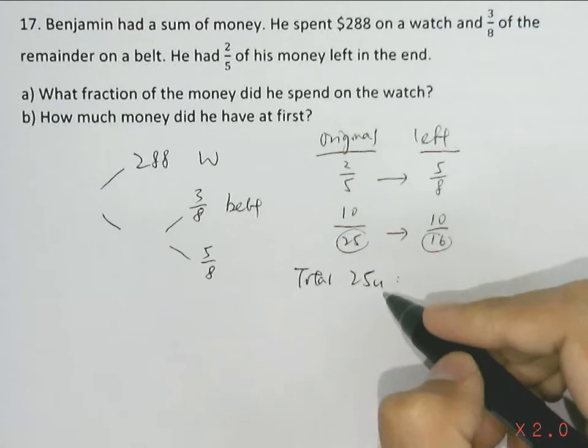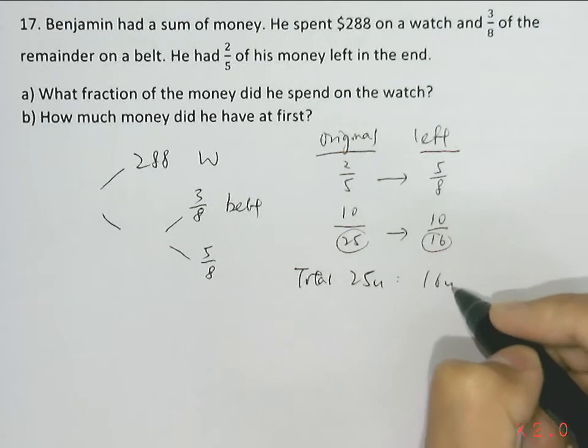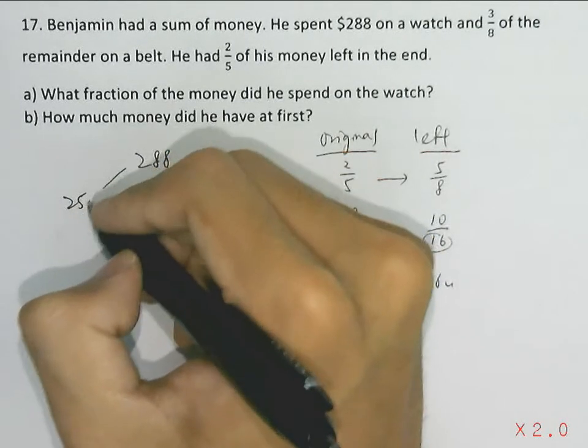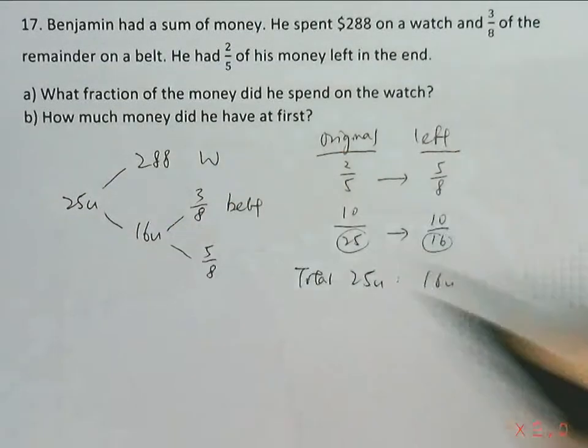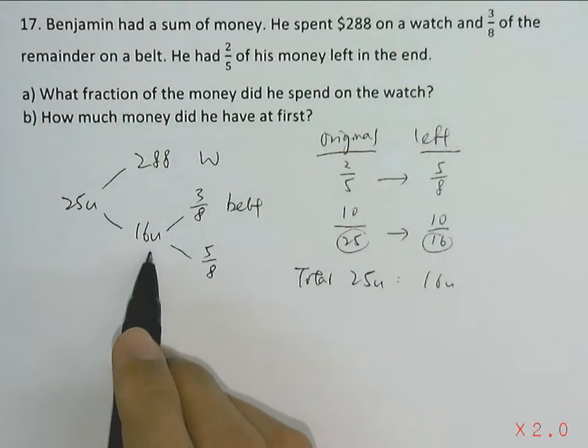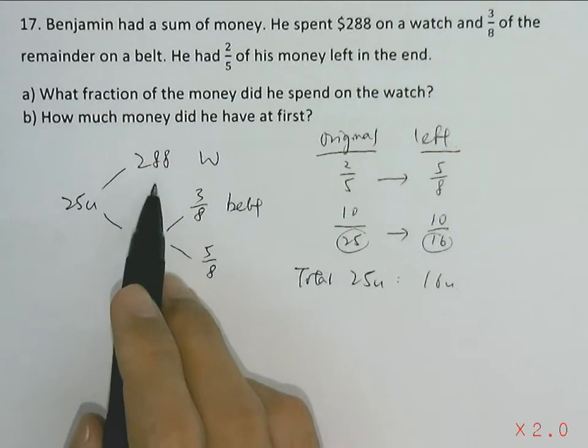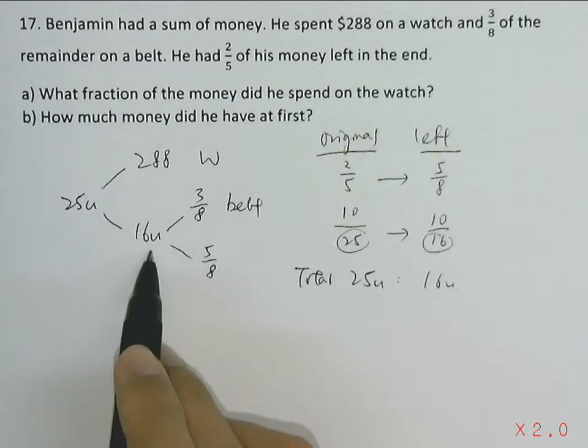At first he had 25 units, and in the remainder he had 16 units. That also means that if he had 16 units left, the amount he spent on the watch would have been 9 units, since he had 25 units in total.